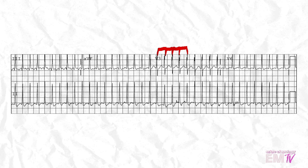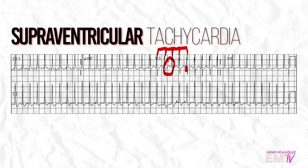The R-to-R interval here is very consistent, and I'm not seeing any sort of real definitive P wave between the R-to-R intervals. It's just sort of lumped into a large, single, amalgamous complex. My QRS is also very, very narrow. Because of the consistent R-to-R interval, the lack of a definitive difference between P and T wave, and the narrow QRS, my diagnosis of this rhythm is going to be supraventricular tachycardia, or SVT.